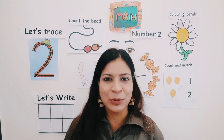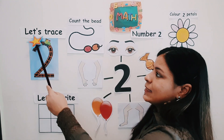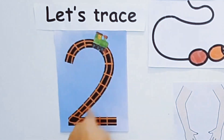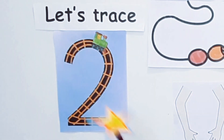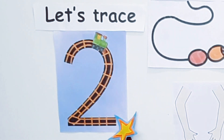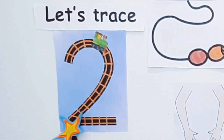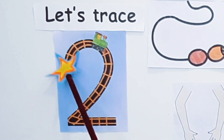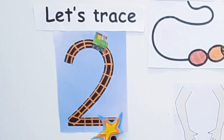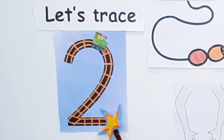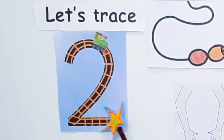Now let's see the formation of number two. Let's trace. Number two has a curve and a sleeping line, and we say 'around and across.' Around and across. Say along with me: around and across, around and across.